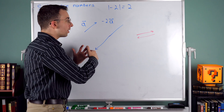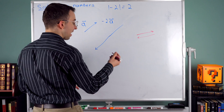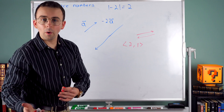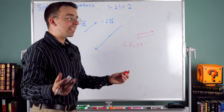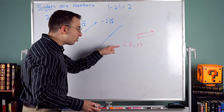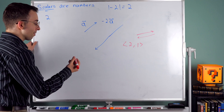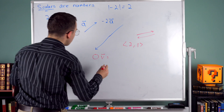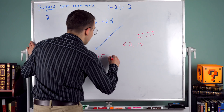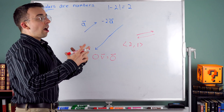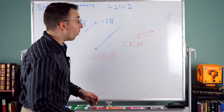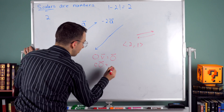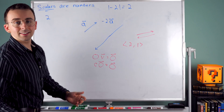Next, we're going to talk about scalars with algebraic representations of vectors — how that's going to work when we multiply a vector by a scalar. Before we get to that, if we have a scalar of zero times any vector, it's going to be the zero vector, which is a vector with magnitude zero and no particular direction. Similarly, any scalar times the zero vector is going to give us the zero vector.